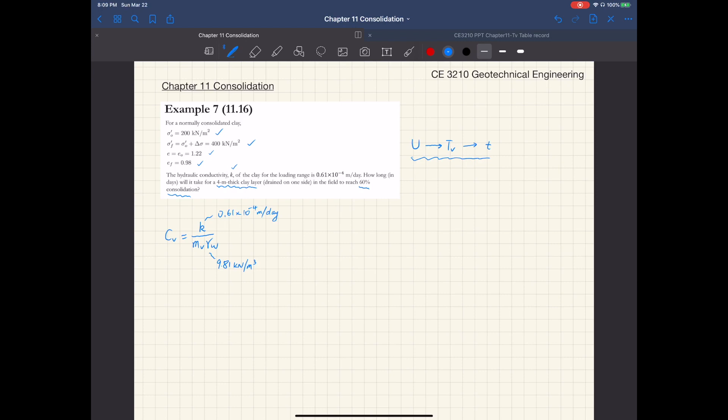So the key is to find this coefficient of volume compressibility M sub V. So M sub V is related to the coefficient of compressibility A sub V over 1 plus E average.